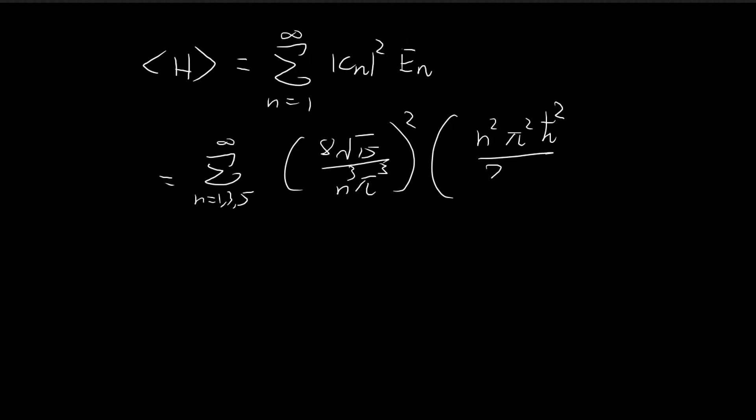The third thing we're going to look at is the expected value of total energy, the expected value of the Hamiltonian. Recall in the earlier derivations we found that this formula is indeed true. We can use this infinite series to find the expected value of the Hamiltonian for the system in Example 2.2. We only need to consider the odd terms because cn equals 0 if n is even. We substitute in the expression for the nth energy state.